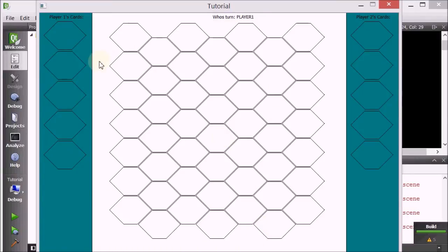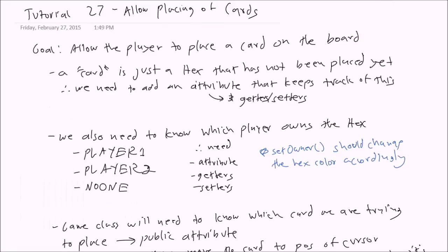The next thing I want to do is allow the player to click these cards and then be able to move them onto the board. That's the goal of this tutorial. As usual, I always make a planning sheet. The purpose of this task is to allow placing of cards. My goal is to allow the player to place a card on the board. Now a card and a hex are the same thing — a card is just a hex that has not been placed yet.